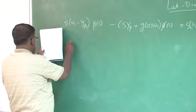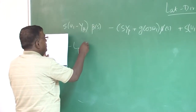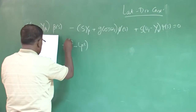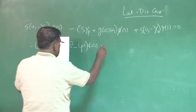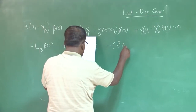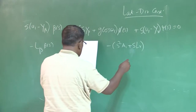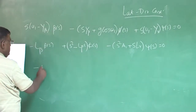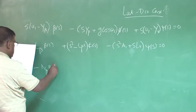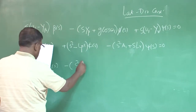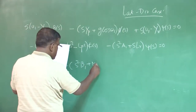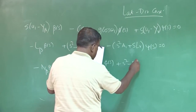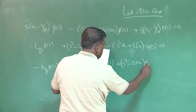This is minus l_beta into beta(s) plus s-squared minus l_p·s into phi(s) minus s-squared·a1 plus s·l_r into psi(s) equal to 0. Similarly, minus n_beta into beta(s) minus s-squared·b1 plus n_p·s into phi(s) plus s-squared minus s·n_r into psi(s) equal to 0.